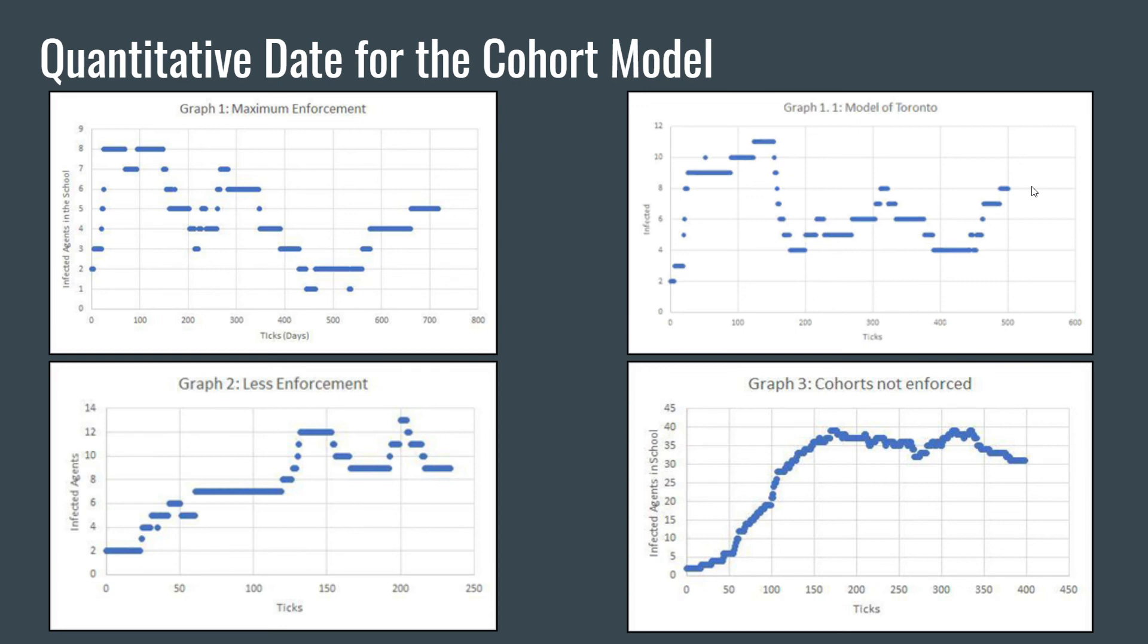Overall, this model has shown great promise for the cohort system, and it has shown the effect that it can have in comparison to a system of returning to school without it. As such, we are able to recommend the cohort system. We have performed similar studies for other models using different cities, and we have been able to recommend the majority of our social distancing measures.